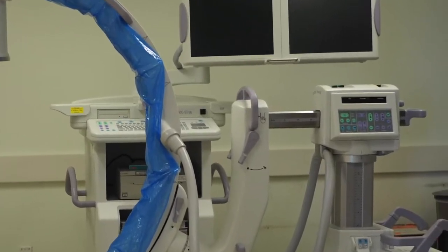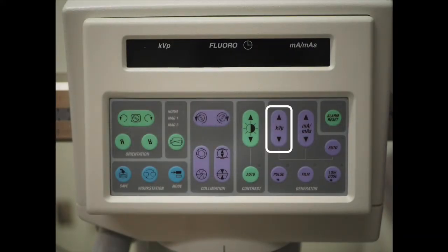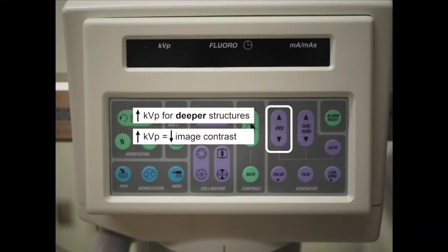Now let's take a closer look at the C-arm control panel. KVP is the voltage or tube potential. Increasing the voltage increases the penetration of the X-ray beam, which can be helpful when viewing deeper structures, but actually reduces image contrast.